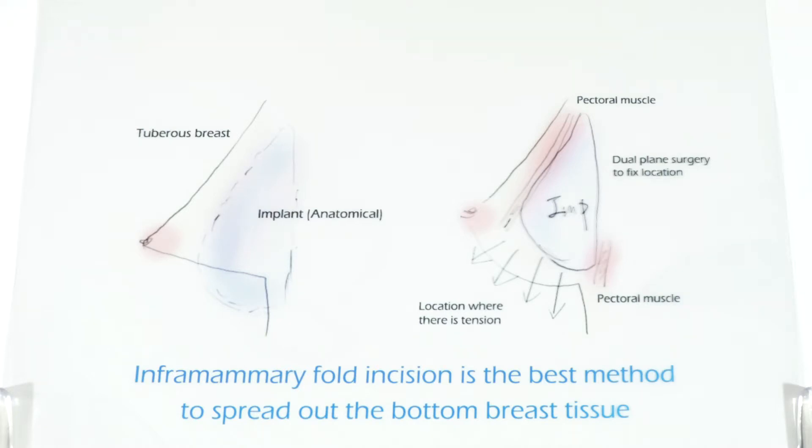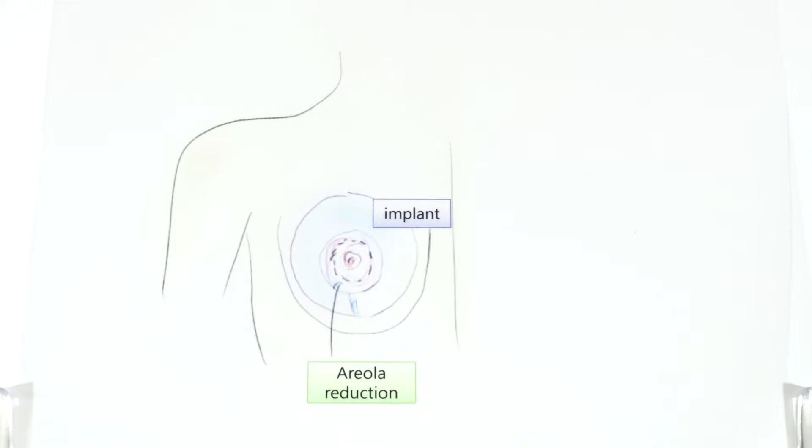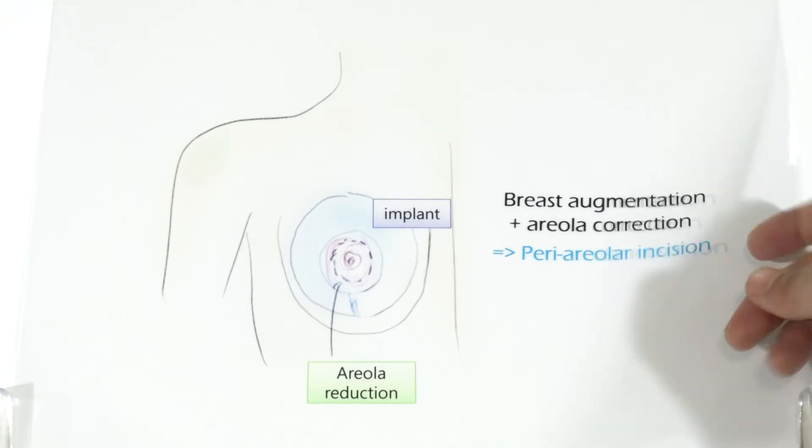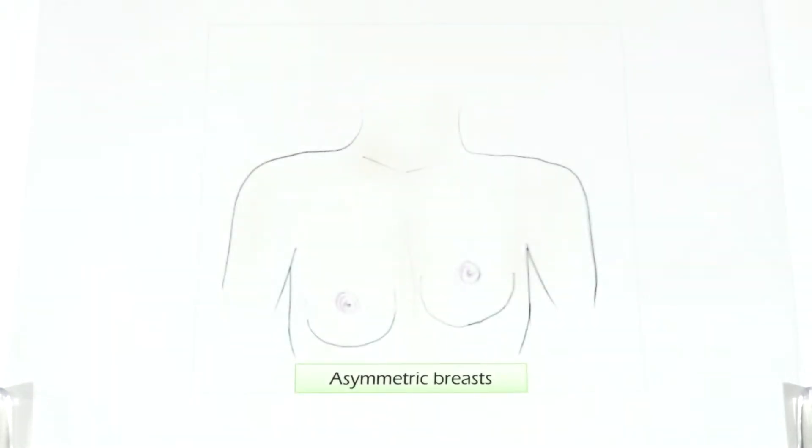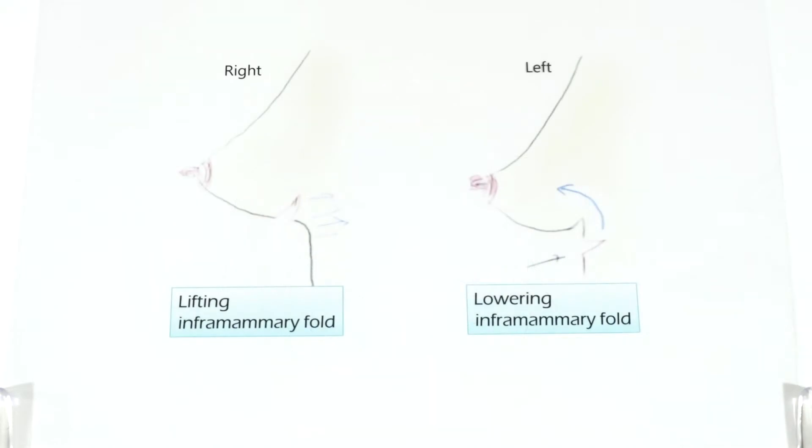If you want both breast augmentation and areola correction, then the best method would be periareola incision. Same applies when you do breast lifting through the areola. You need to remove the original inframammary fold if you want to fix asymmetric breasts caused by asymmetric inframammary fold or areola.